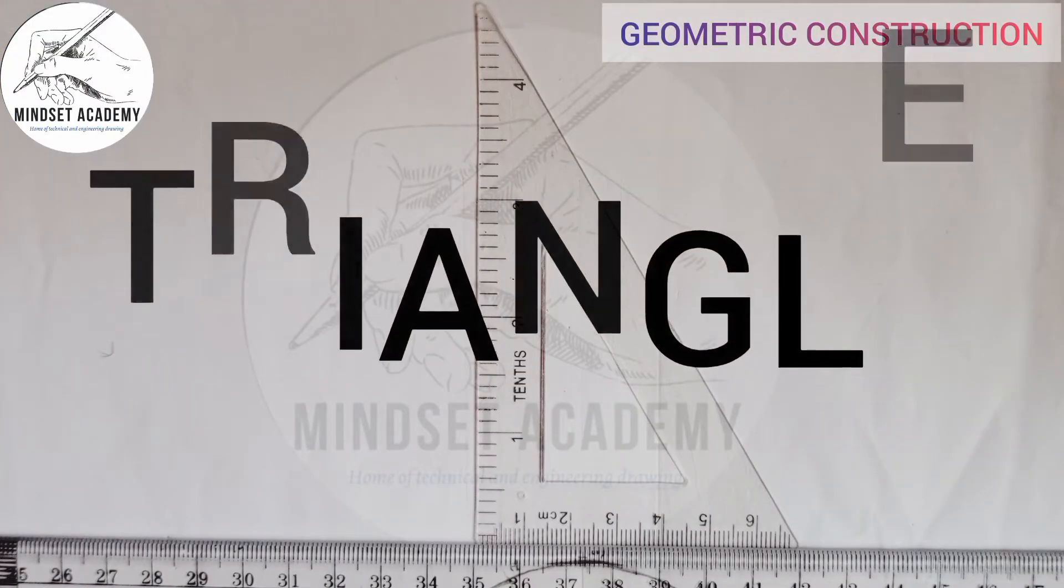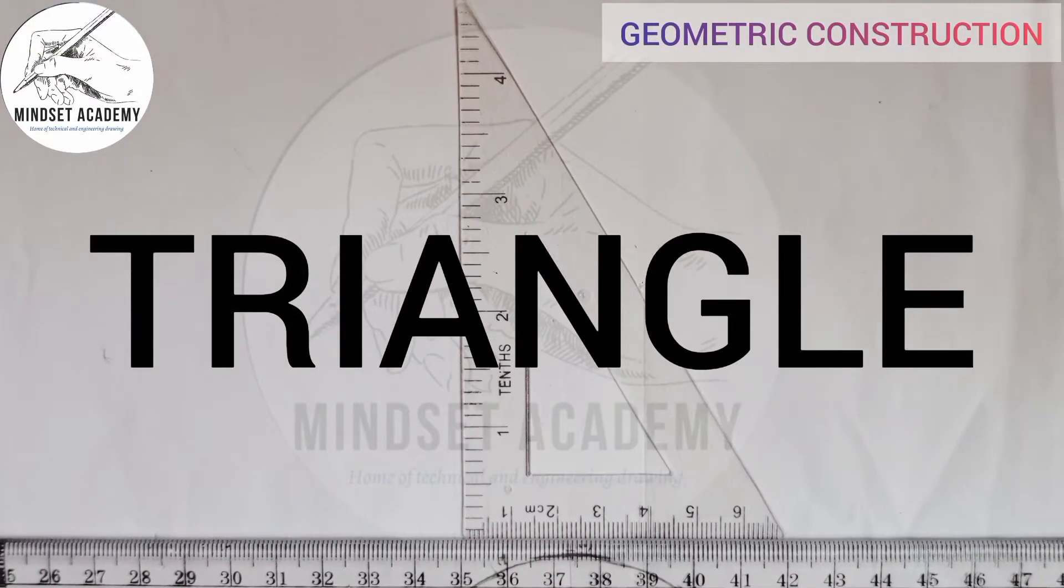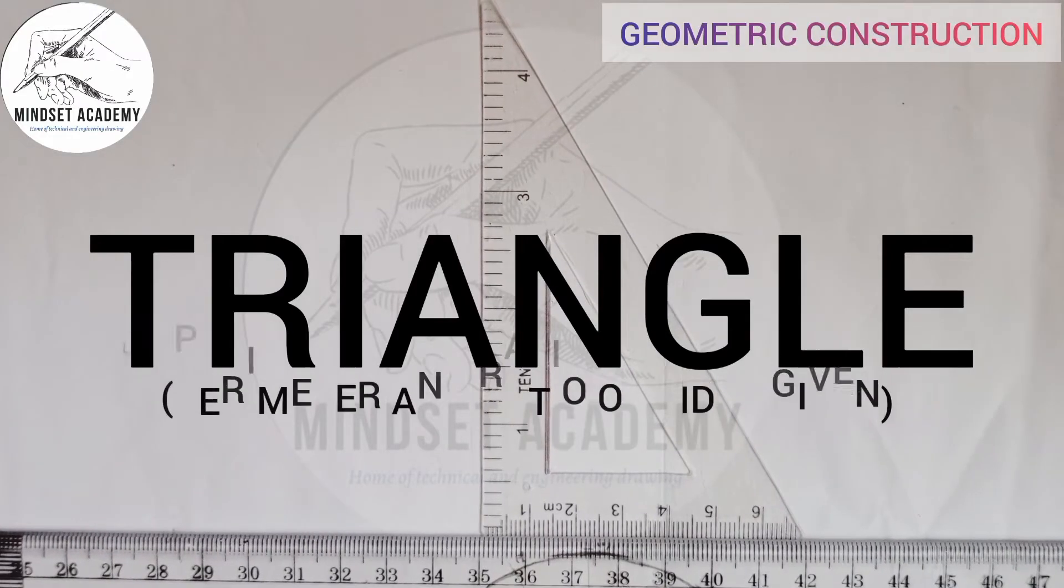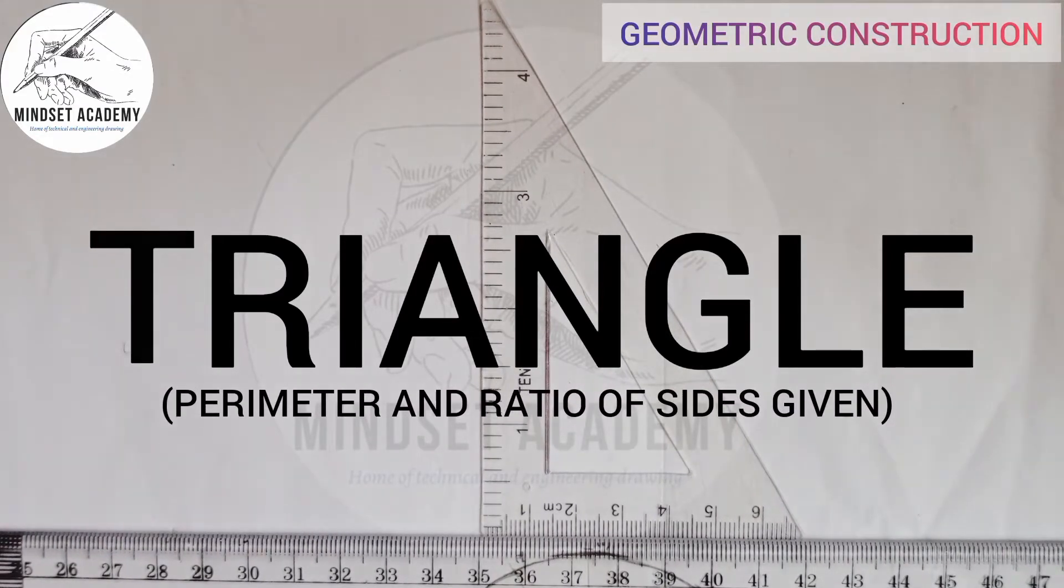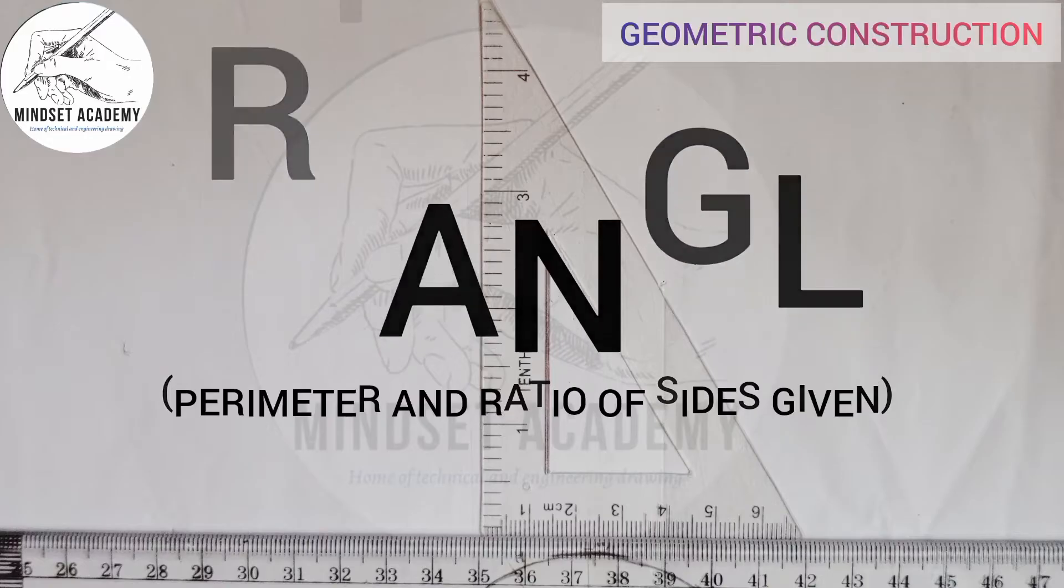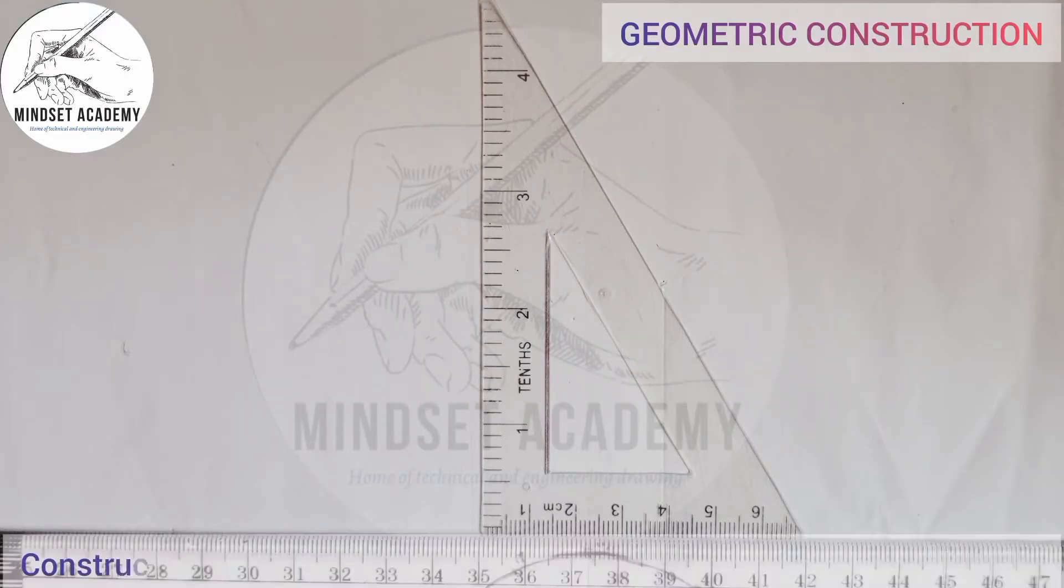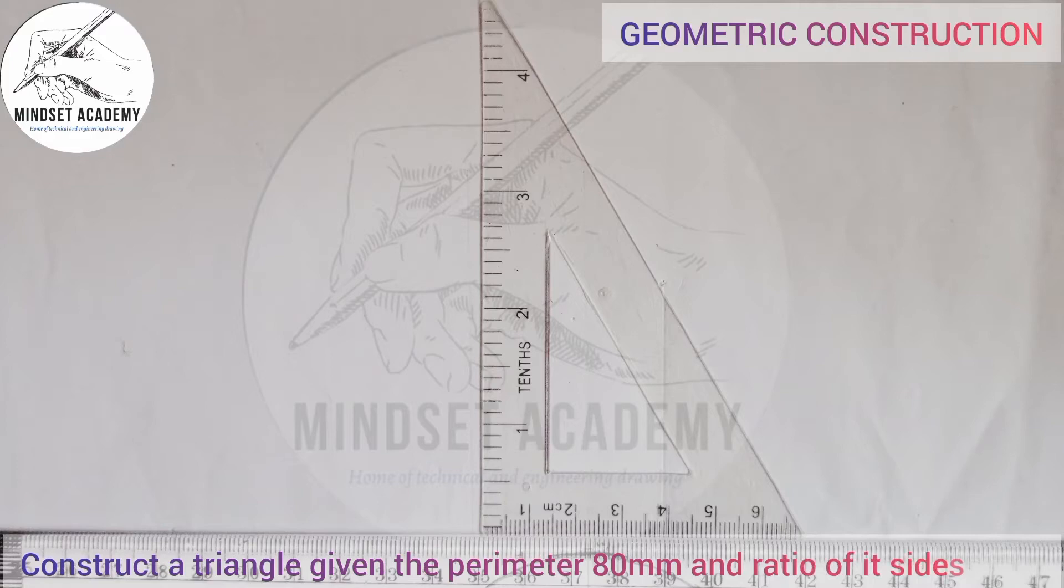Welcome to my channel Mindset Academy, where we want to construct a triangle. The question goes like this: construct a triangle given the perimeter 80 millimeters and ratio of sides 3:4:5.